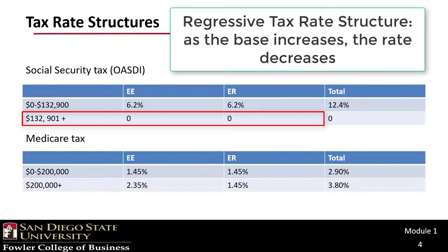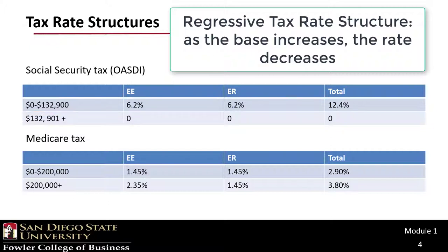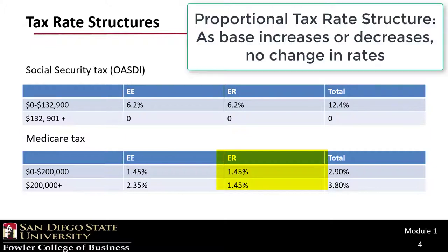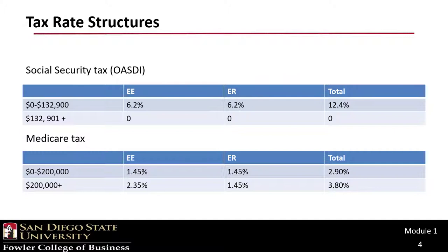After the FICA cap, the rate is 0%. In this case, as the base increases, the rate decreases, making this a regressive tax rate structure. The Medicare table shows that the employee portion is progressive, while the employer portion does not change as the base increases or decreases. When that is the case, we refer to that tax rate structure as proportional, or more commonly, a flat rate tax.